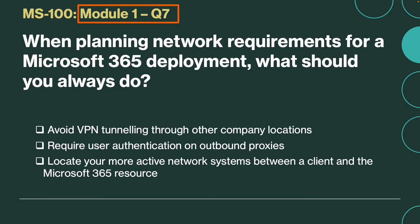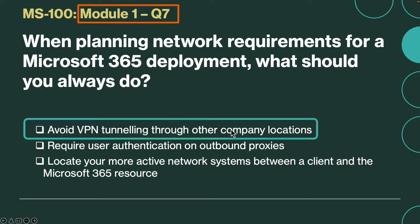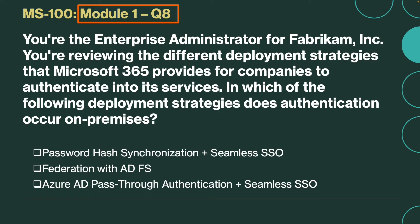Question number seven. When planning network requirements for a Microsoft 365 deployment, what should you always do? Is it avoid VPN tunneling through other company locations, require user authentication on outbound proxies, or locate your more active network system between a client and the Microsoft 365 resource? The correct answer is avoid VPN tunneling through other company locations. All locations should use a direct connection to Microsoft 365 and not use VPN tunneling to route through other company locations.